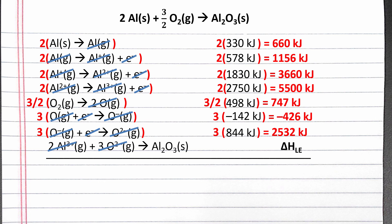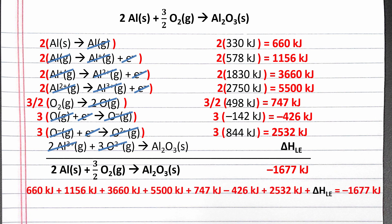Adding together all of these reaction steps, we get the standard enthalpy of formation equation for aluminum oxide, which has an enthalpy change of negative 1677 kilojoules. Since we can add all of these steps together to get the overall reaction, according to Hess's law, if we add together the enthalpy changes for all of the reaction steps, we will get the enthalpy change for the overall reaction. If we solve this equation for the lattice energy, we get negative 15,506 kilojoules for the formation of one mole of aluminum oxide.